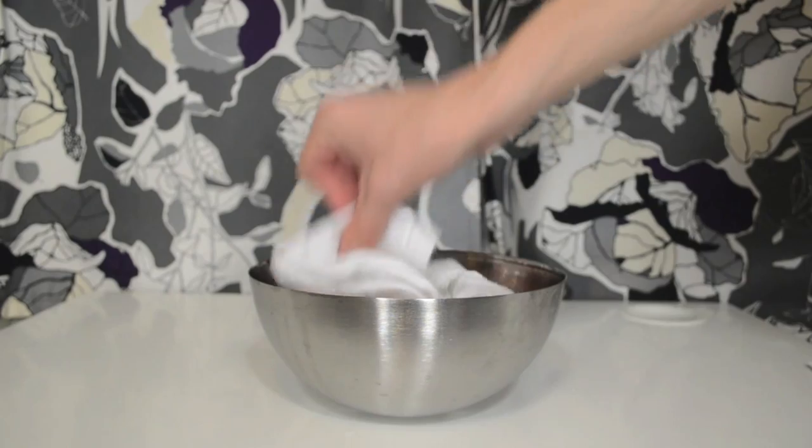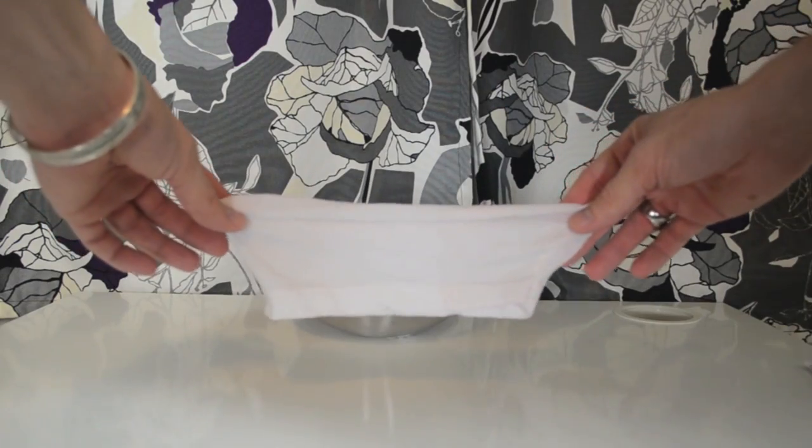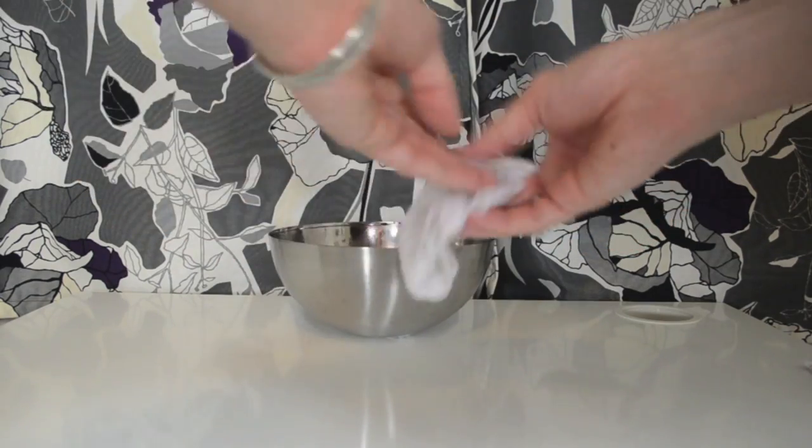The last step is to take a swatch of your fabric and dip it in the blood. Then go to your sink and try to wash it out. If it comes out white, then you're good. And obviously I was good.